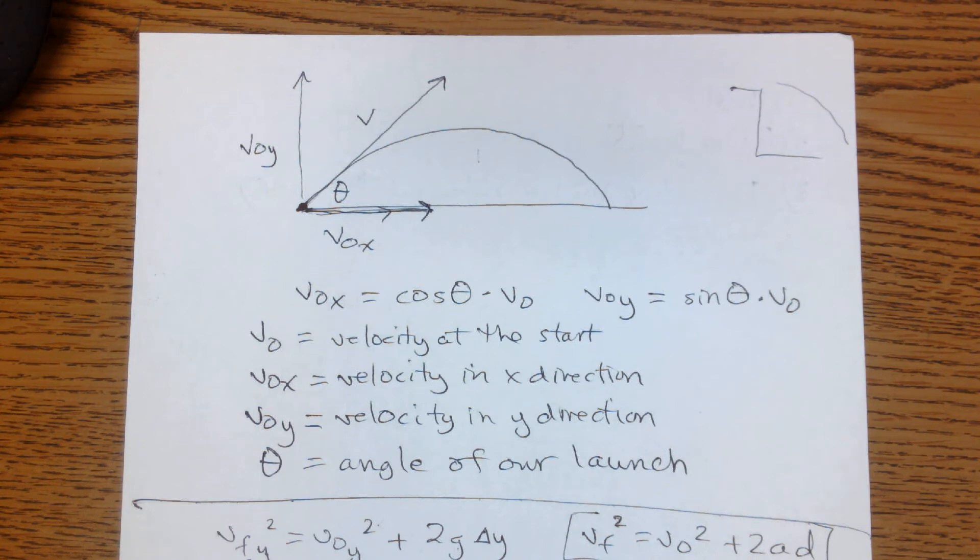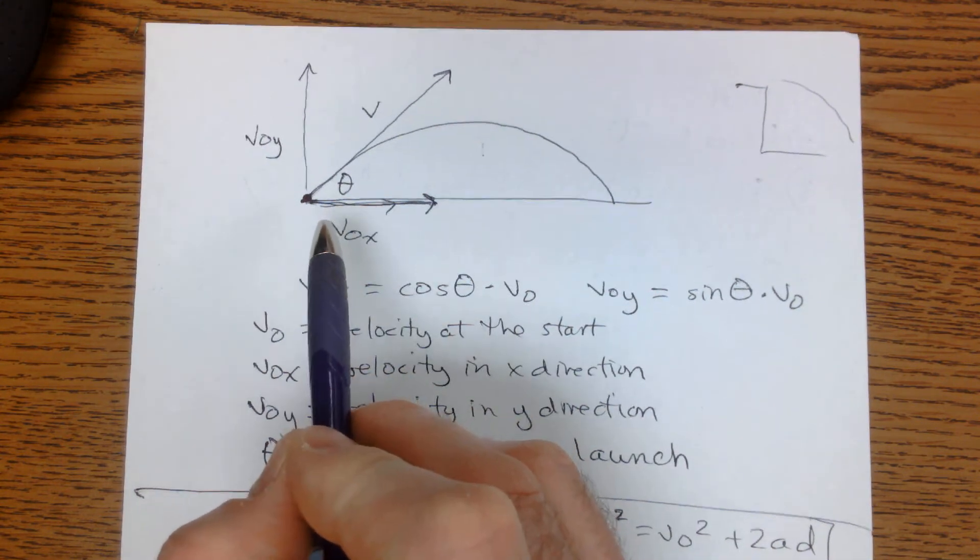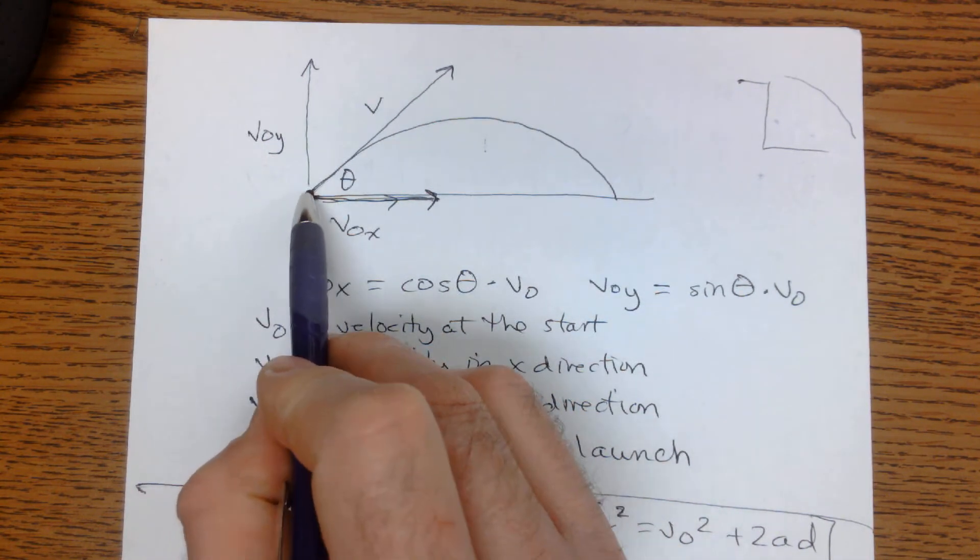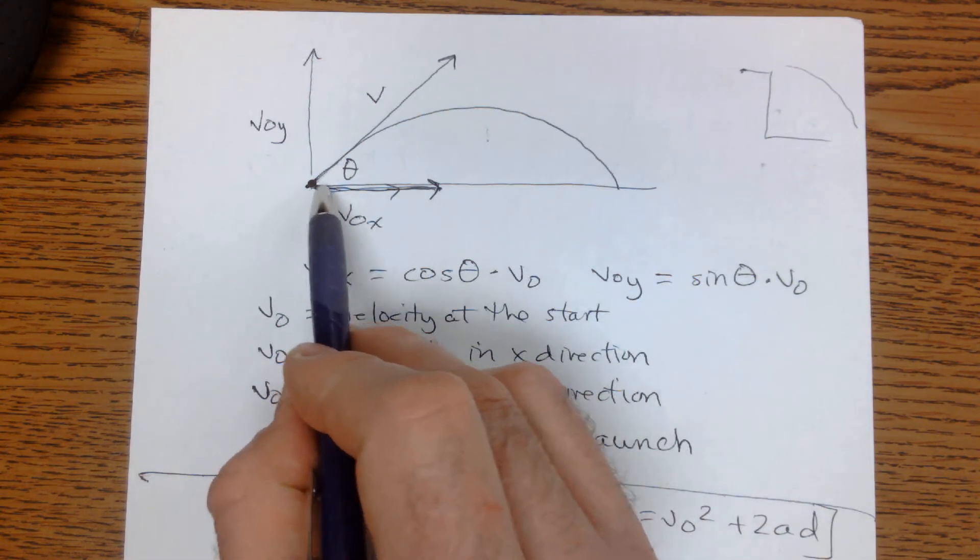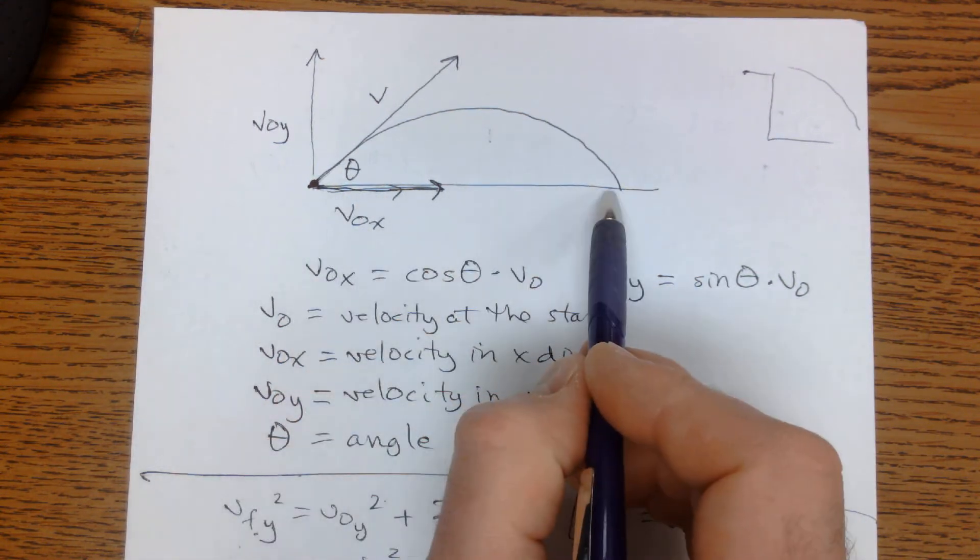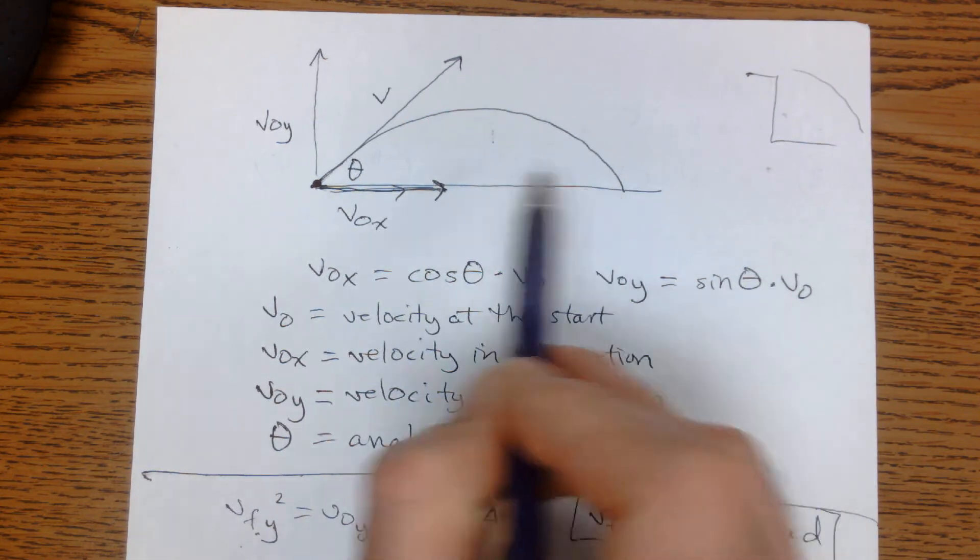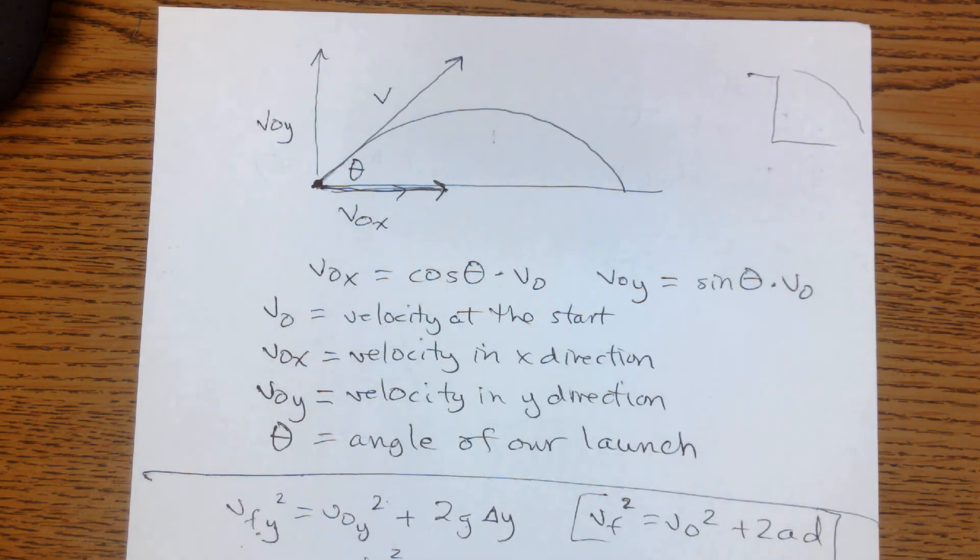Ultimately our goal is to know what's the range of this projectile shooter, how far will it shoot. Range is the term for the distance in the x direction that this thing ends up from its starting spot on level ground, so there's a way that you can do that.